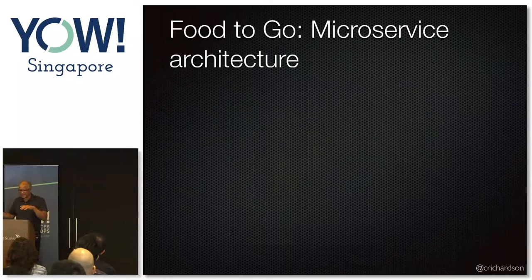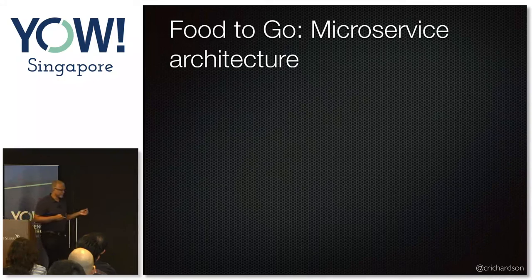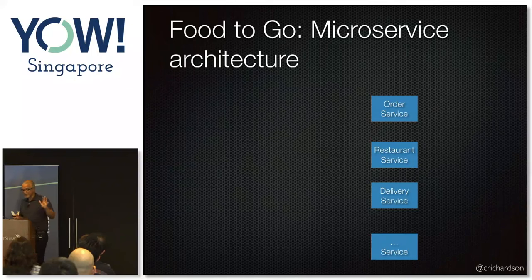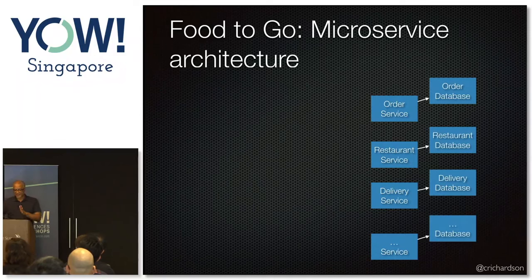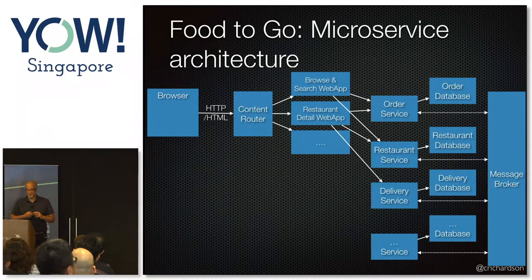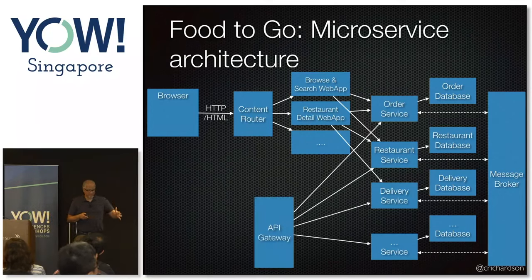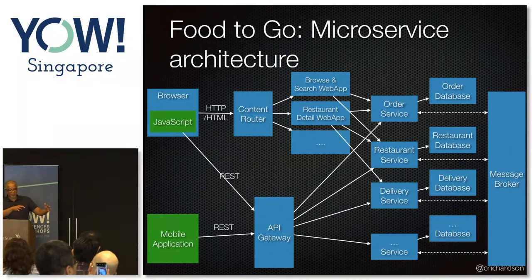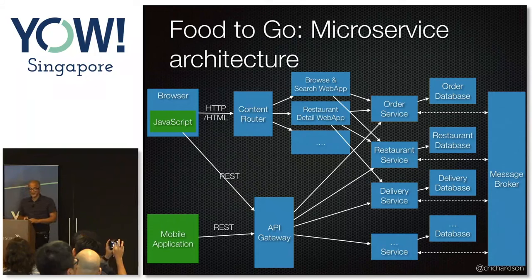In the microservice version of the food-to-go example, you'd have a bunch of services — each implementing a business function like order management or delivery management. Each service has its own database, which is important for loose coupling. Services often communicate asynchronously. Sitting in front of them is an API gateway that defines the external API, invoked by JavaScript in a browser and also by a mobile application. As you can see, it's a bit complicated with lots of moving parts, which hints at some of the drawbacks of this approach.